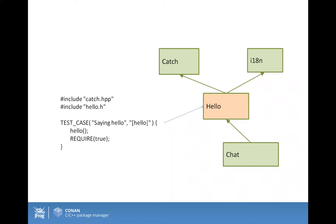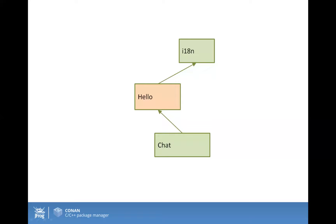But this has some problems. If I depend on the Catch package from hello, what happens when my developers are working on the chat application downstream and they depend on hello — that is already a prebuilt package? When they retrieve hello, they will also be retrieving Catch. And probably they don't need it at all, because it's just a testing framework that the hello package uses. So Catch is different from other dependencies — it's not a regular dependency.